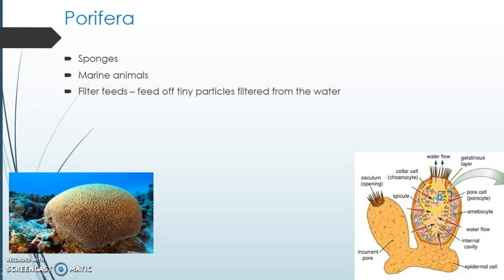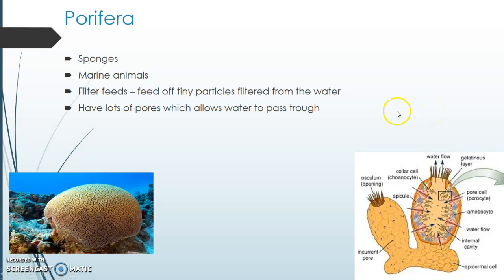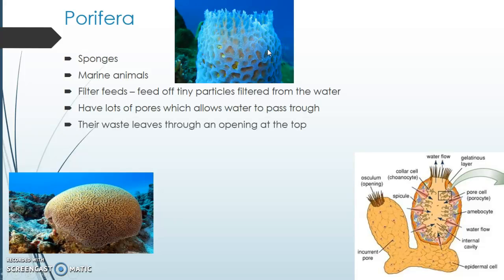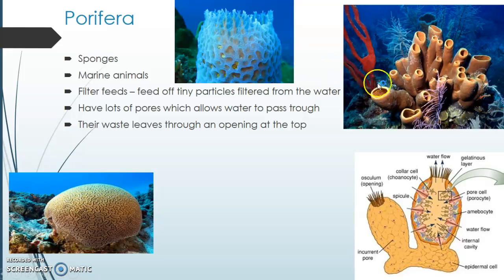The pores let water in — you can see it can flow in there — and then these tiny little structures all through the sponge can catch the food out of the water, and then it comes out the top. They have lots and lots of pores to let this water pass through, and you can see this in this sea sponge up here. Sometimes they live in clumps like this and look like a bunch of chimneys.